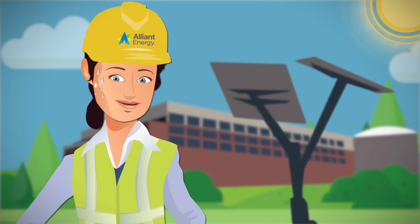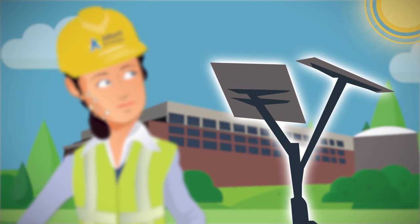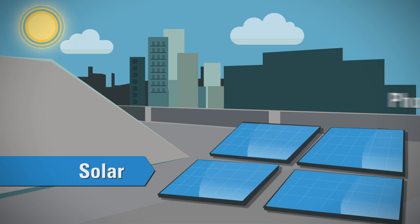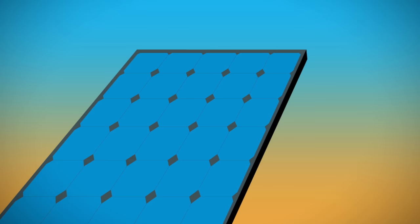We all know that the Sun's energy creates heat and light, but it is increasingly being used as a source for power. Surely you've seen solar or photovoltaic panels, also known as PV panels, on rooftops. They convert sunlight directly into electric current.